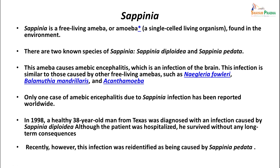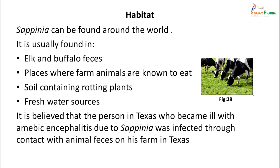Another organism, Sappinia, which has recently been understood to cause similar infection, is again a free-living amoeba found in the environment. There are two known species of Sappinia: Sappinia diploidea and Sappinia pedata. The amoeba causes amoebic encephalitis, an infection of the brain. Infection is similar to other free-living amoeba infections such as Naegleria, Balamuthia, and Acanthamoeba infections. Only one case of amoebic encephalitis due to Sappinia has been reported worldwide. In 1998, a healthy 38-year-old man from Texas was diagnosed with this infection - he was hospitalized but survived without any sequelae. The infection was recently re-identified and has been attributed to Sappinia pedata. It is found in environments where elk and buffalo species are present, where farm animals feed, or near rotting plants and fresh water sources. The Texas patient is believed to have contracted it from contact with animal feces on his farm.